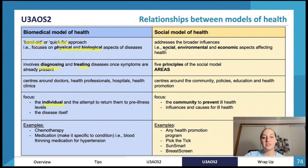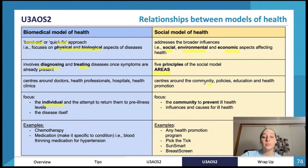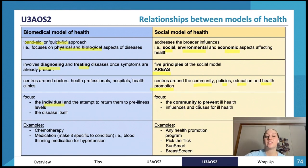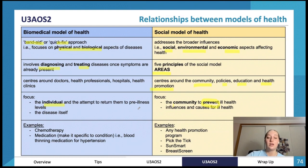The social model of health addresses social, environmental, and economic aspects affecting someone's health. There are five principles of the social model, which we'll look at shortly. It centers around community policies, education, and health promotion — not just hospitals and health clinics. The focus is to prevent ill health, whereas the biomedical model deals with consequences after disease has occurred. The social model tries to prevent that disease from occurring in the first place.